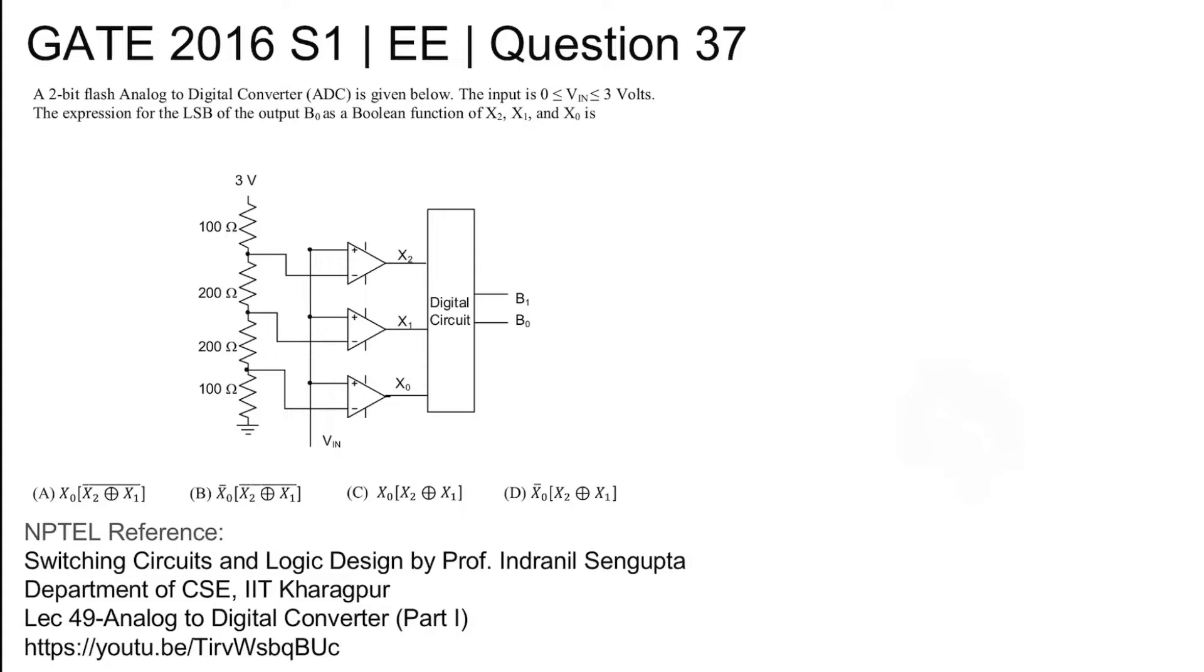This is GATE 2016 Set One Electrical Question Number 37. A 2-bit flash analog-to-digital converter is given below. The input is between 0 to 3 volts, both included, and the expression for the LSB of the output B0 is asked as a boolean function of x2, x1, and x0. This is the given digital circuit.